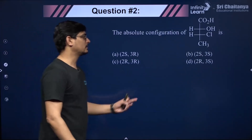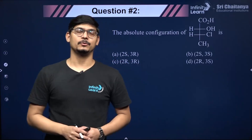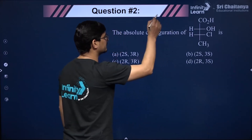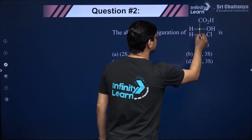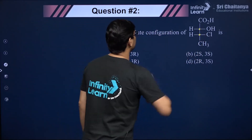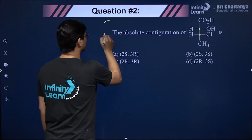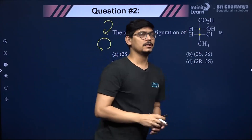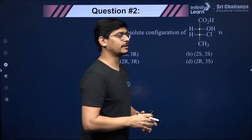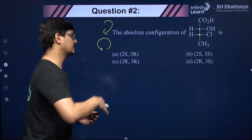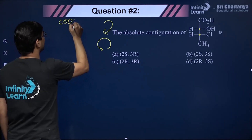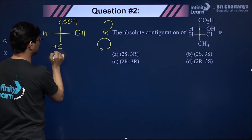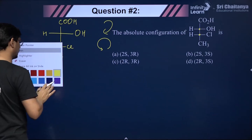Moving to absolute configuration — R and S help identify and distinguish chiral carbon atoms. This is a Fisher projection with two chiral carbons. R stands for rectus (clockwise) and S for sinister (anti-clockwise). The rules: first look at atomic number, then atomic mass, then the successive number of atoms. For the upper chiral carbon, the four substituents are: OH (highest atomic number, priority 1), then the carbon groups, and H (priority 4).